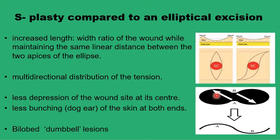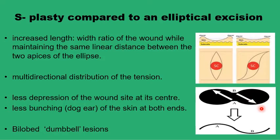Another big advantage of the acoplasty is when you are excising a dumbbell lesion. Rather than transforming the dumbbell lesion into a big crescent around it, you can remove it with a safety margin. You then suture one of the central points — A — into position, and B on the other side, ending up with an acoplasty that has preserved more tissue and distributed the tension in a better way.